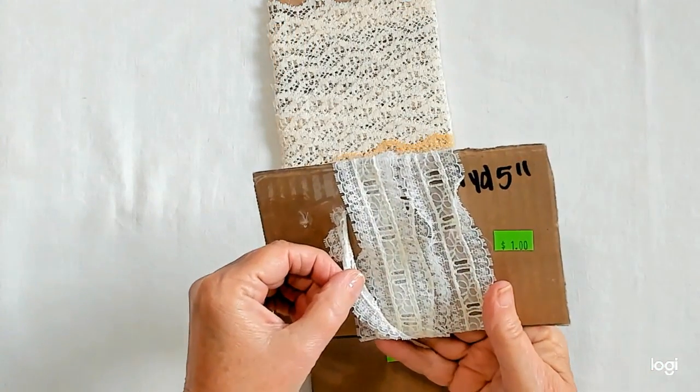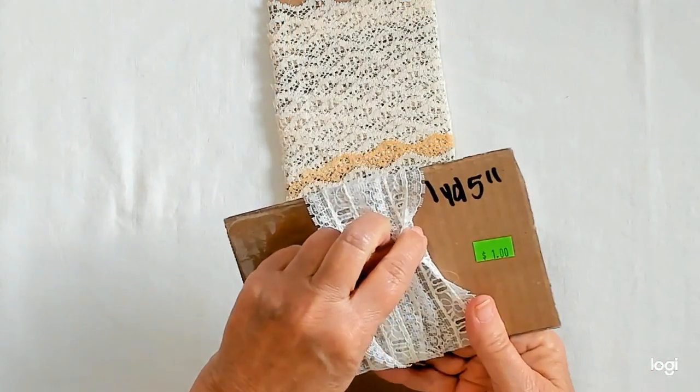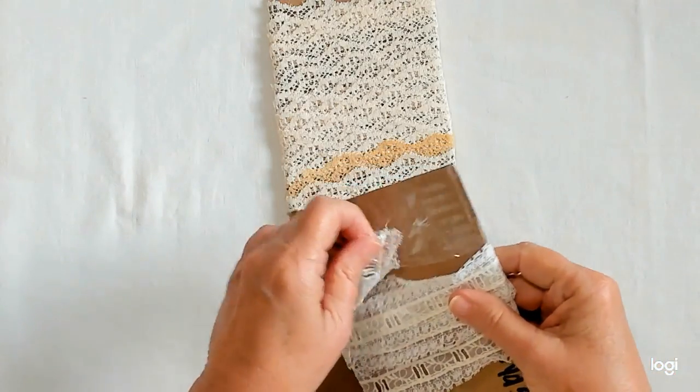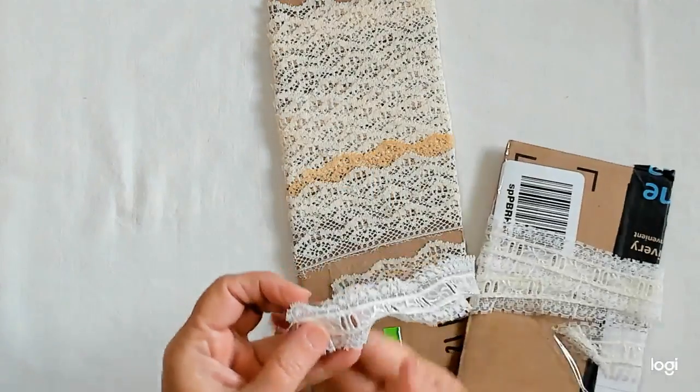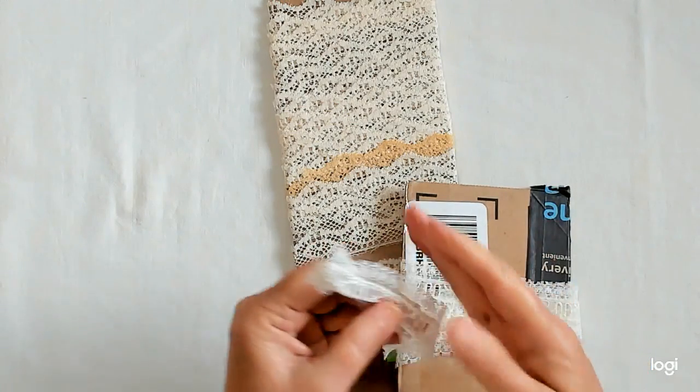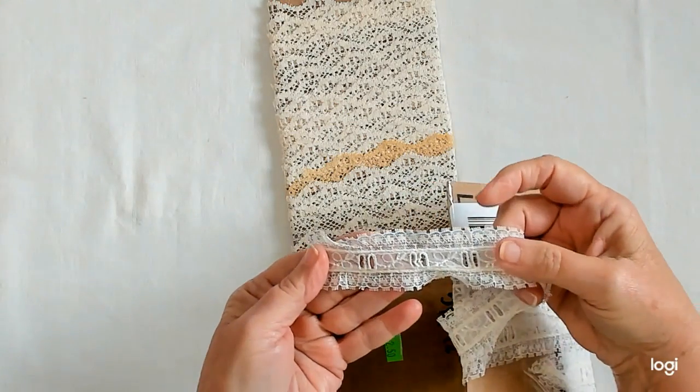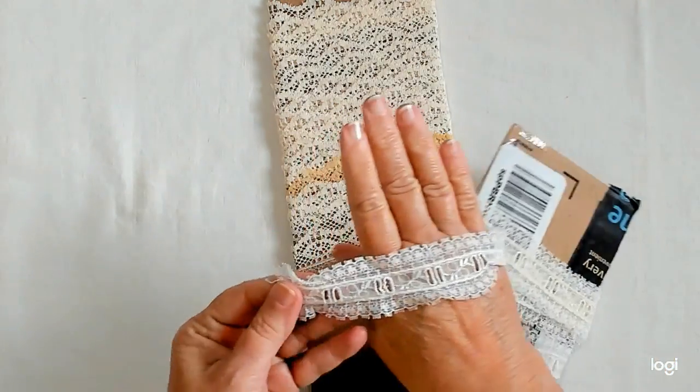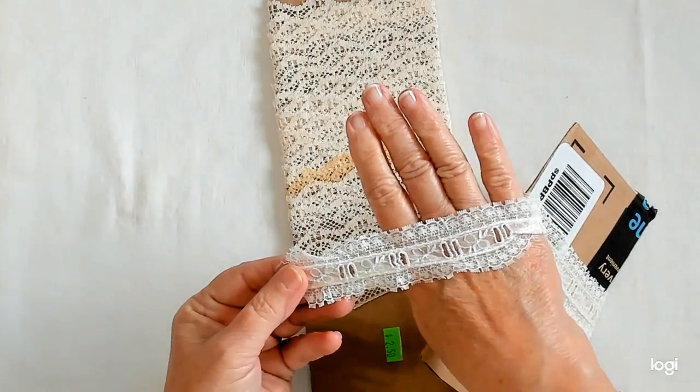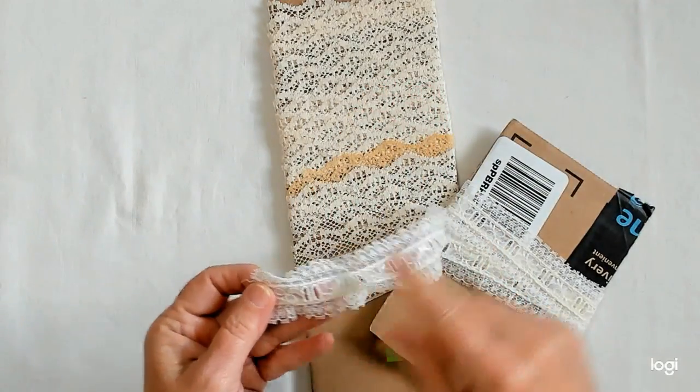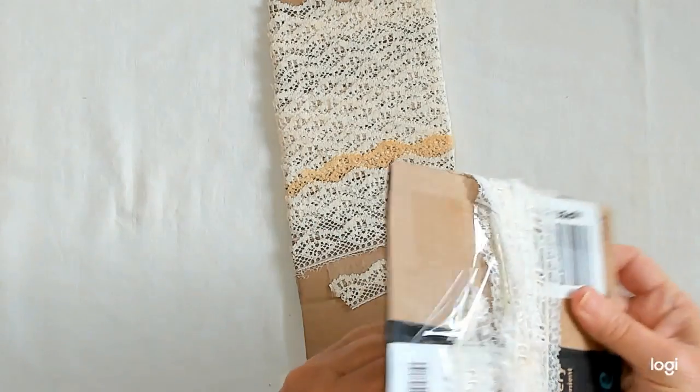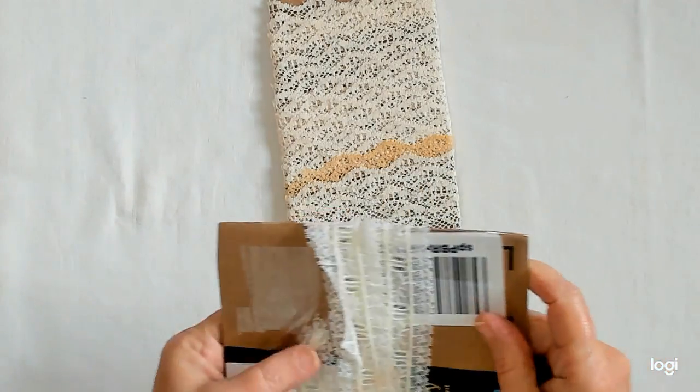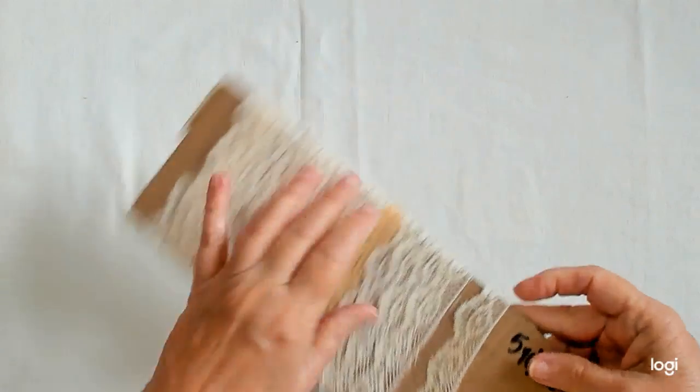And this has a yard and five inches on it. And this is, I think, is really pretty. Let's show you this. There we go. That's the right side. Isn't that pretty? Love that. And there again, it's one of the laces that you can run a ribbon through it.